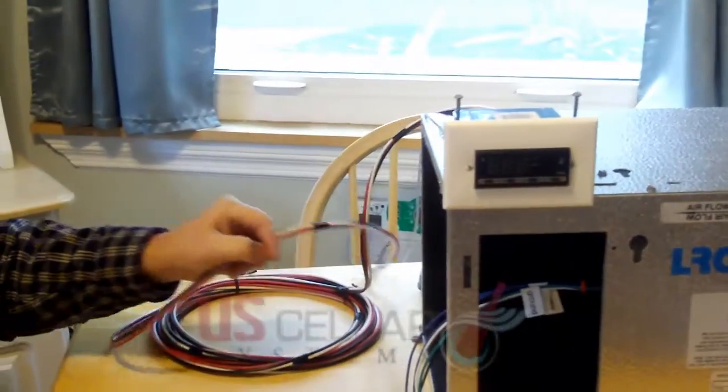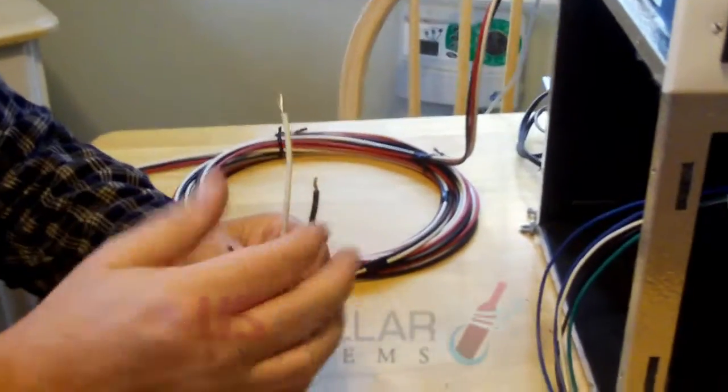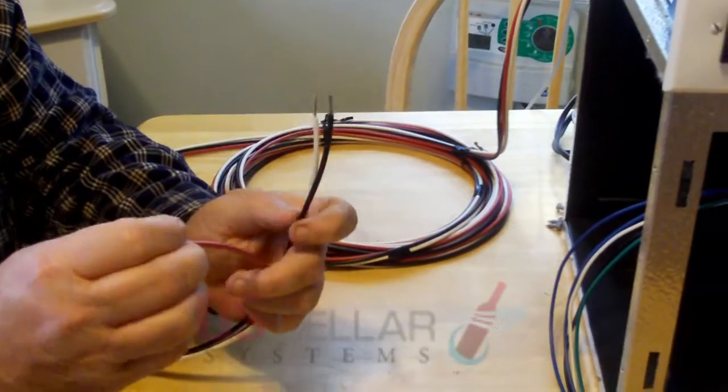As we covered before, everything is coming from the digital controller mounted in the wall. You now have three wires that are being brought up to the evaporator coil. You've got a black wire, a white wire, and a red wire.